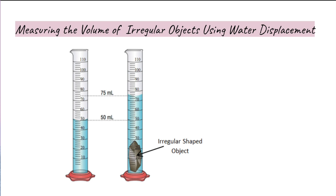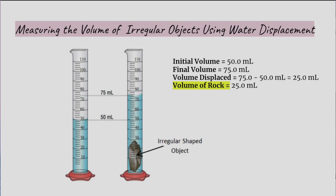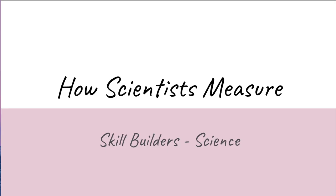To find the volume of the object, find the difference between the final and initial readings. Make sure the volume you calculate makes sense — a negative volume is an obvious sign of a mistake. For example, if the initial volume is 50 mL and the water rises to 75 mL after placing the rock, the volume of the rock is 75 mL minus 50 mL, which equals 25.0 mL. Since every line on this graduated cylinder went up by ones, the last digit is estimated to the tenths place as 25.0. That concludes our video on how scientists measure!